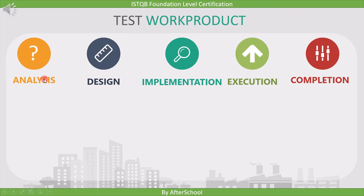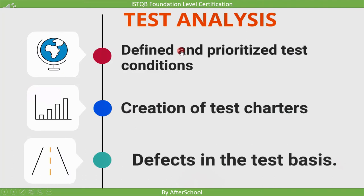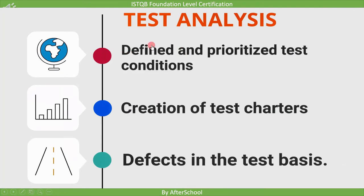Now let's see the output of test analysis, design, implementation, execution, and completion. Starting with test analysis: the first output is defined and prioritized test conditions — along with finding the test condition, we also prioritize them. The second output is creation of a test charter, which means documentation of the goal or objective for a test session. The third output is discovery and reporting of defects in the test basis.